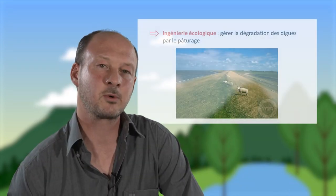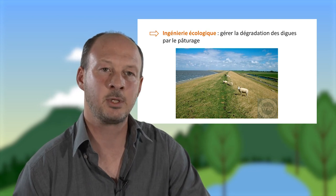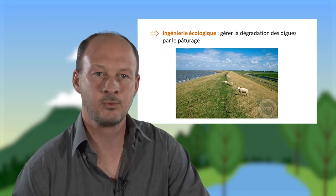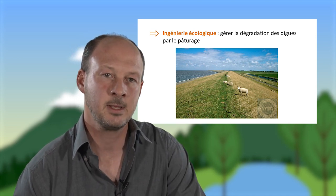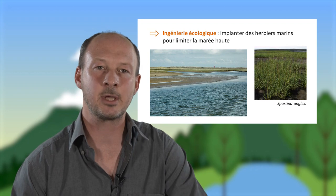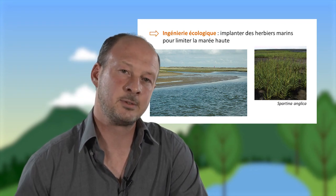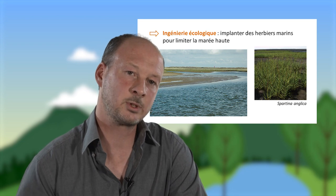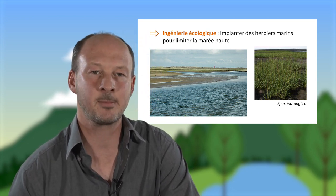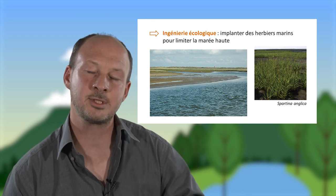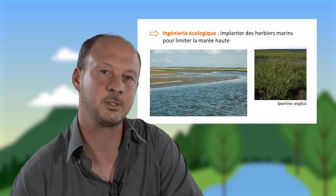Une autre solution préconisée par l'ingénierie écologique, c'est de faire pâturer des moutons sur la digue pour limiter l'implantation de végétaux ligneux qui la détruisent avec leurs racines. On implante également des herbiers marins dans la mer afin de limiter la montée des eaux lors de la marée haute. Grâce à ces herbiers marins, on arrive à réduire de quelques dizaines de centimètres le niveau de la marée haute, ce qui peut éviter un débordement de la digue.